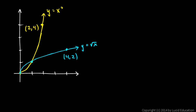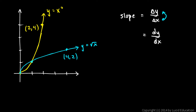Now think about the slope of these functions. For the function y equals x squared, the rate of change of y with respect to x will be related to the rate of change of x with respect to y for its inverse. Remember, slope is rise over run, which is delta y over delta x, or in calculus terms dy/dx. If you switch dx and dy — which is what we do with inverse functions — you have delta x over delta y, or dx/dy.